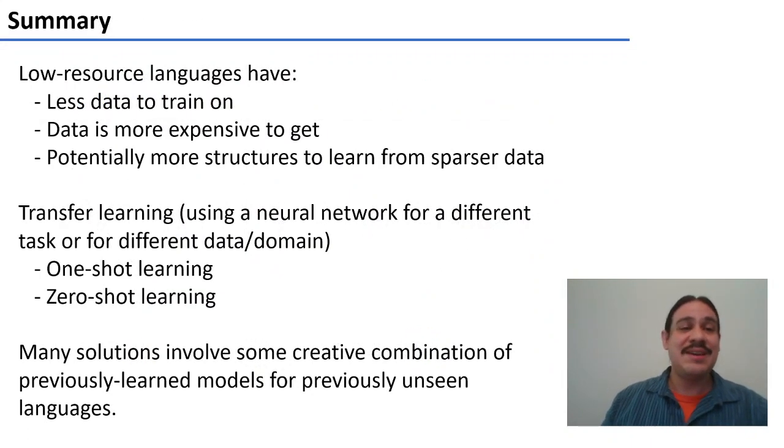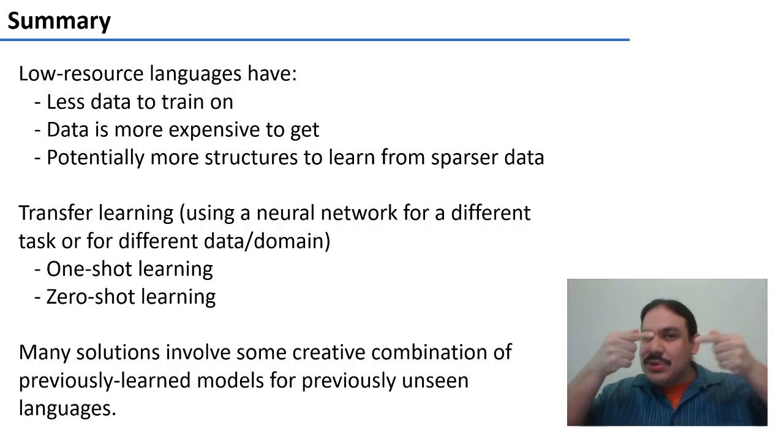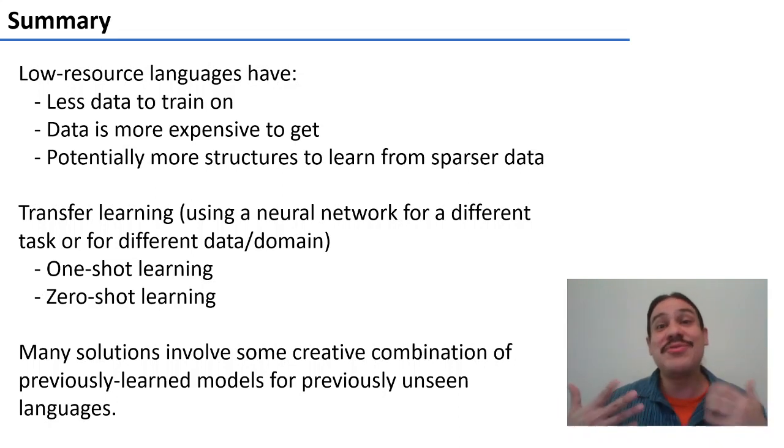In summary, low resource languages have less data for us to train on. The data is just more expensive to get, and potentially you have to learn from sparser data depending on the structure of the language. One of the alternatives that people have done research on is called transfer learning, which is using a neural network that was designed for one task or data, and use it for a different task or data. In one-shot learning, you train just a tiny bit of the neural network to adjust to your new data. In zero-shot learning, you take a previously existing neural network and map its output onto some new kind of output that you want. And people get creative with these kinds of solutions to try to bootstrap models from very large languages to detect information from languages they have never seen before, like Cook Islands Māori.